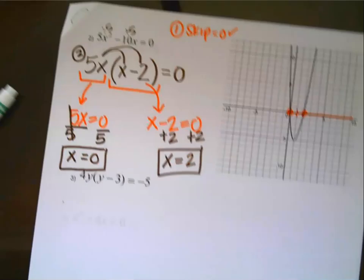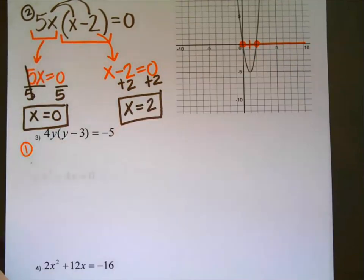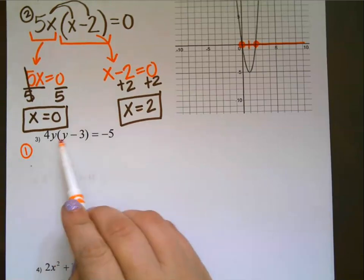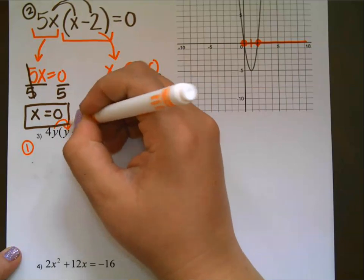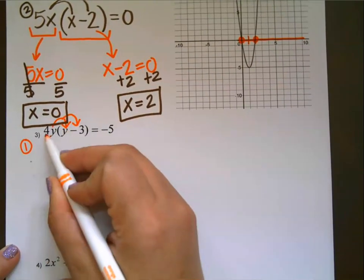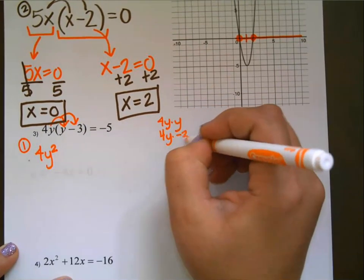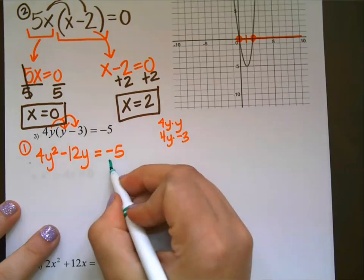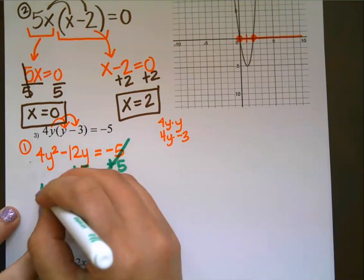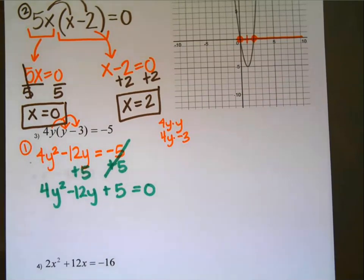Example 3: Step 1 — the equation must equal zero. This is a multiplication problem, but it equals negative 5, not zero. So I can't just set each factor equal to negative 5. I need to expand it first: 4y times y is 4y squared, and 4y times negative 3 is negative 12y. Then add 5 to both sides, giving 4y squared minus 12y plus 5 equals zero. That was all of step 1.